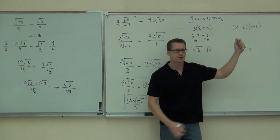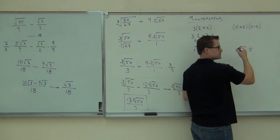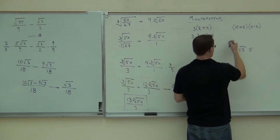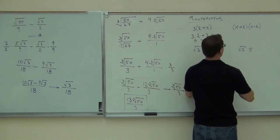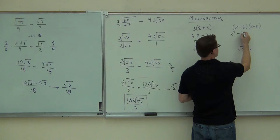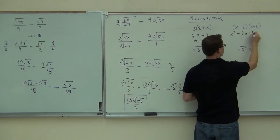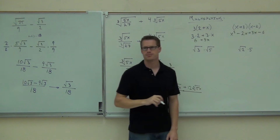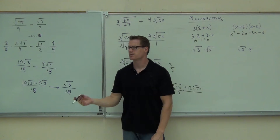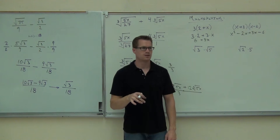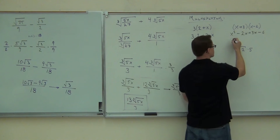FOIL — which is a fancy word for distribute when you have 2 terms times 2 terms. Same idea. If I were to distribute, you'd get x times x squared — because you're doing x times x — giving x squared, plus x minus 6. We get a minus 2x and a plus 3x and a minus 6. Then you'd combine any like terms that you had.